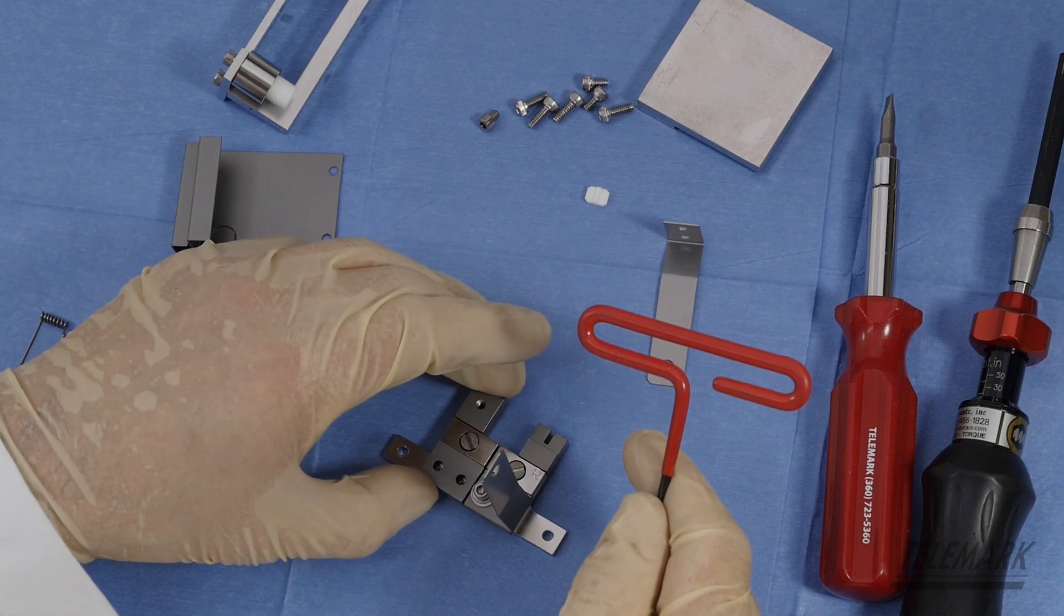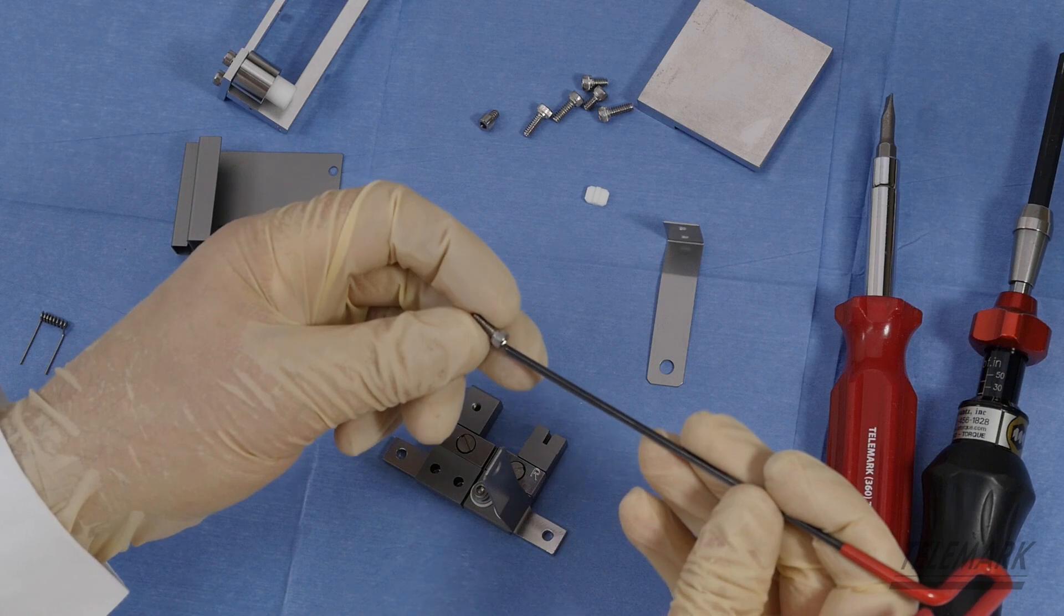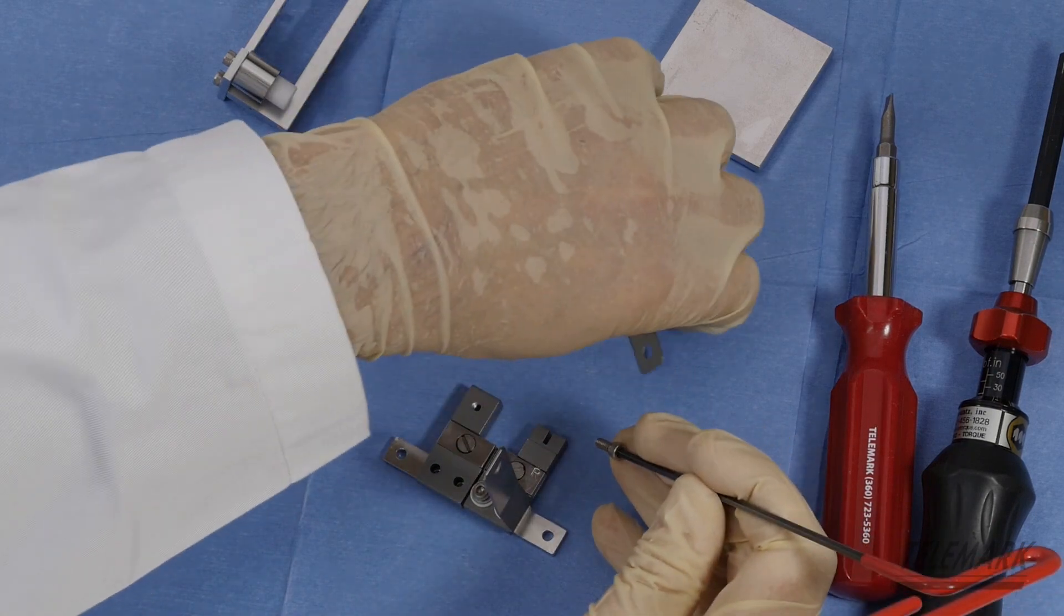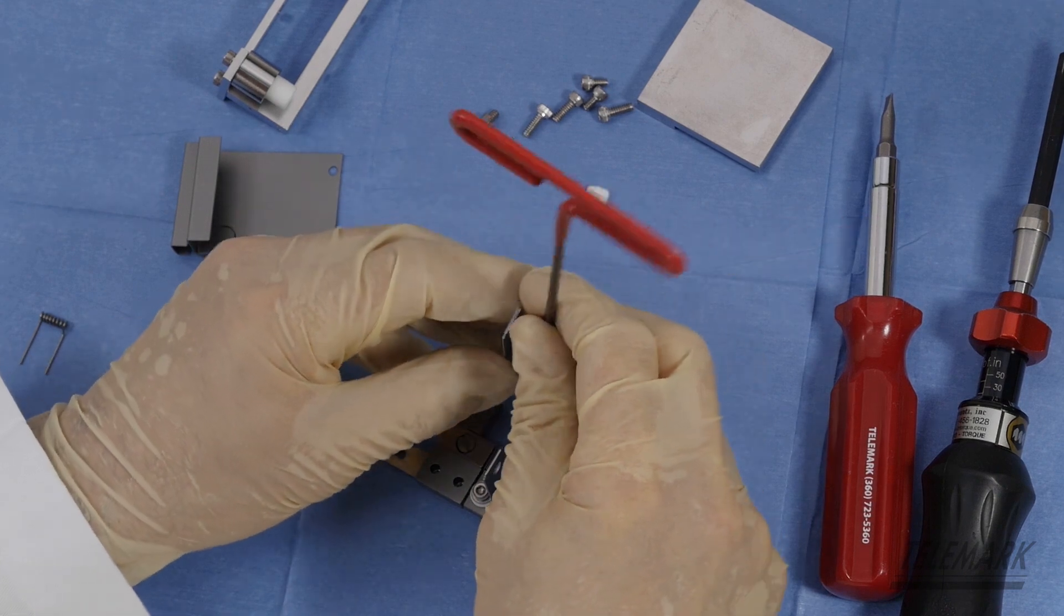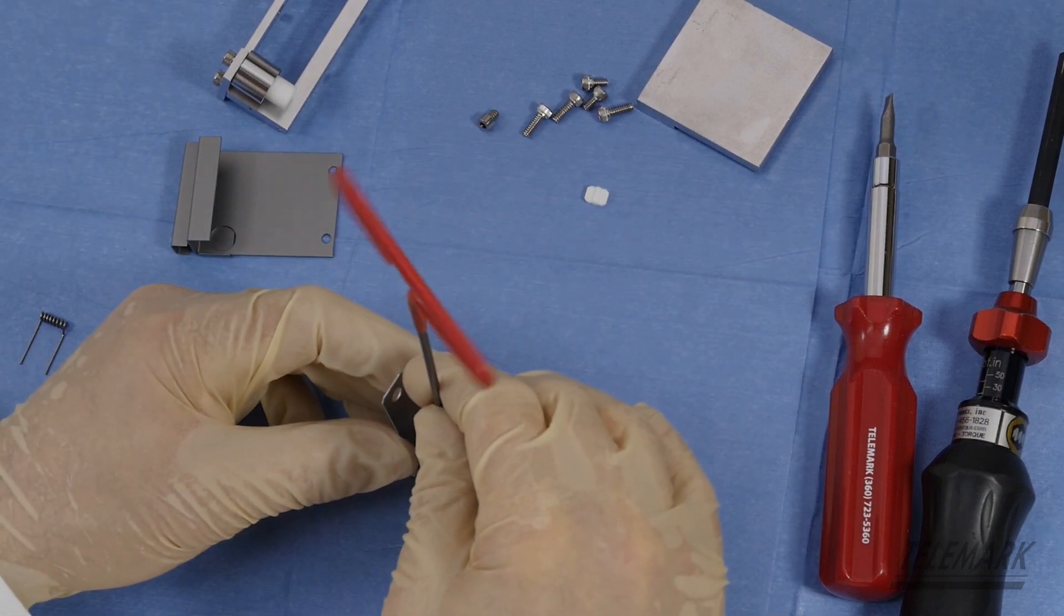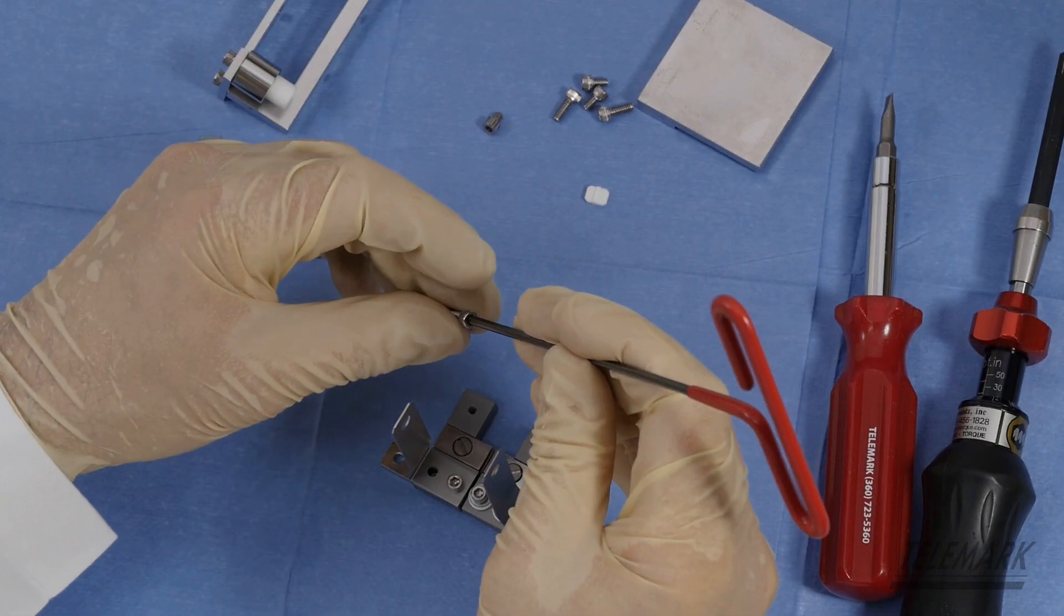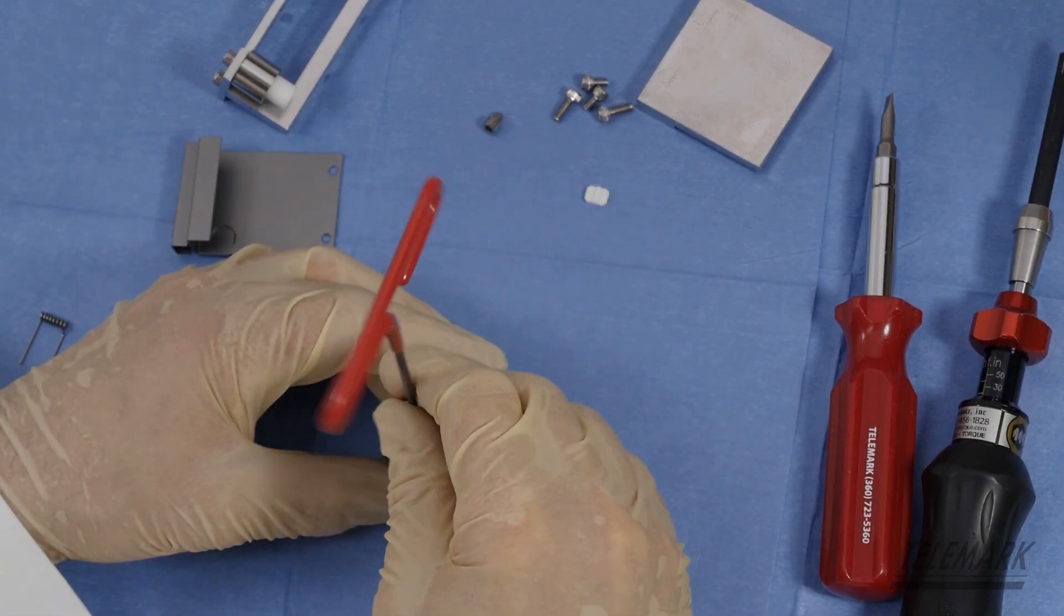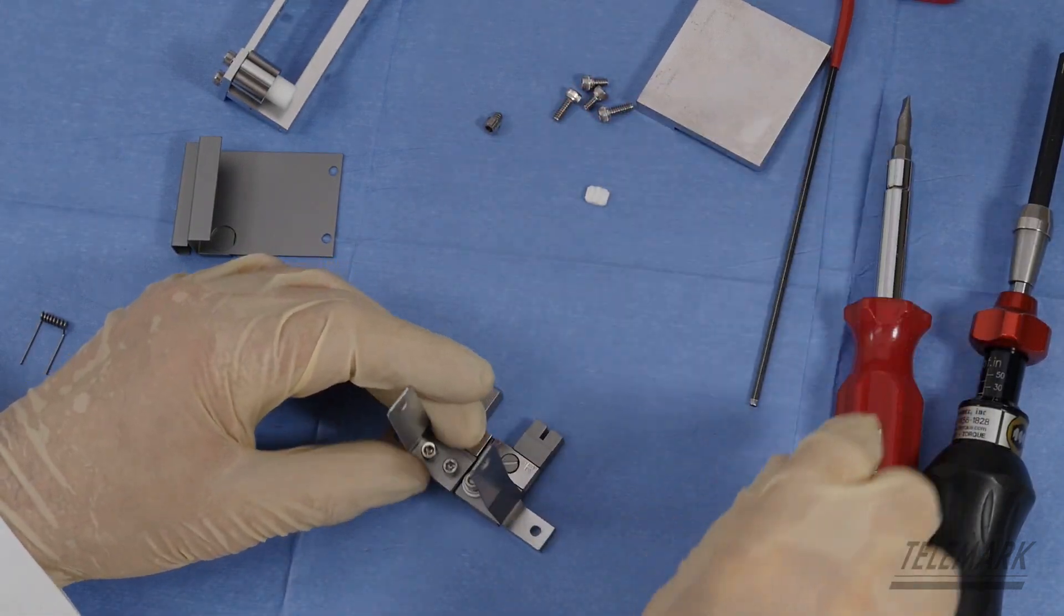Now you've got your left cathode block. Line it up on there. Grab a 632 by 3/8 inch. And then your bus bar. Get those snugged into place too. Like I said, you don't lock them down. Just get them positioned.